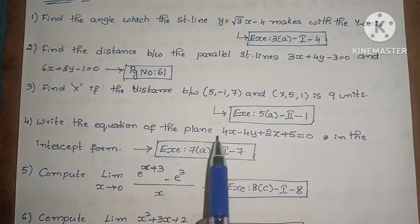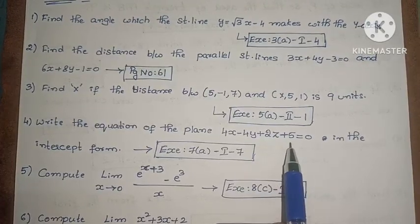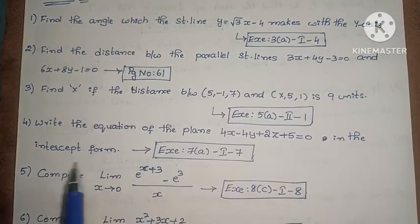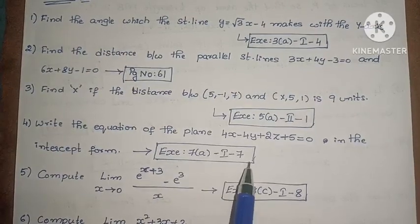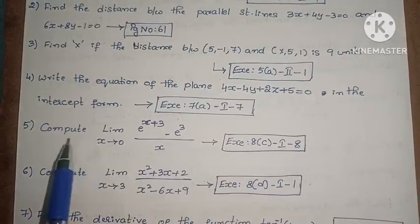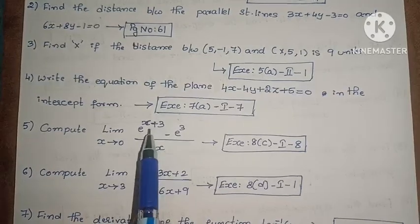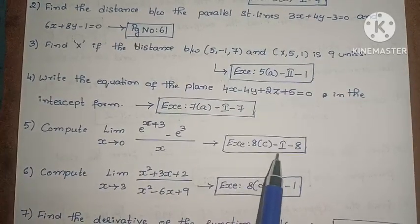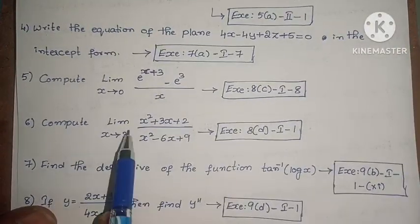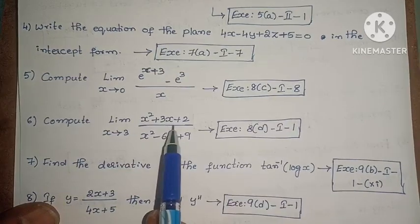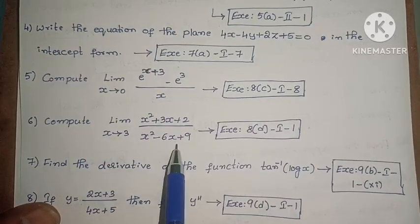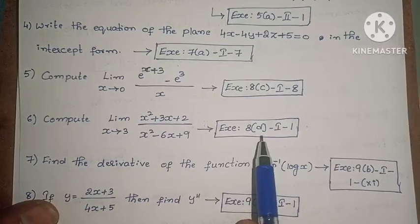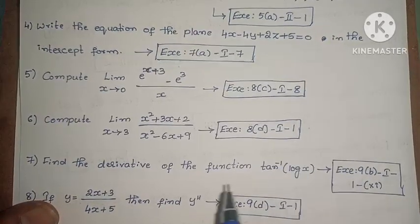Next, write the equation of the plane 4x minus 4y plus 2z plus 5 equals 0 in the intercept form. Exercise 7, first roman law, seventh one. Next, compute limit as x tends to 0 of e to the power x plus 3 minus e to the power 3 divided by x. Exercise 8c, first roman law, eighth one. Next, compute limit as x tends to 3 of x squared plus 3x plus 2 divided by x squared minus 6x plus 9. Exercise 8d, first roman law, first one.